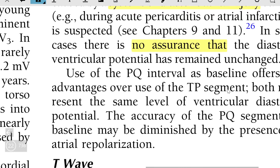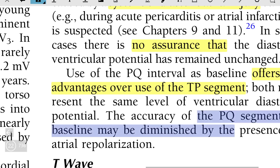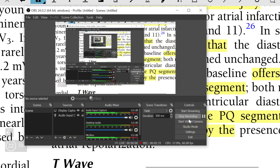The use of the PQ interval as the baseline offers no advantage over the TP segment, as both represent the same level of ventricular diastolic potential. The accuracy of the PQ segment as a baseline may be diminished by the presence of atrial repolarization.